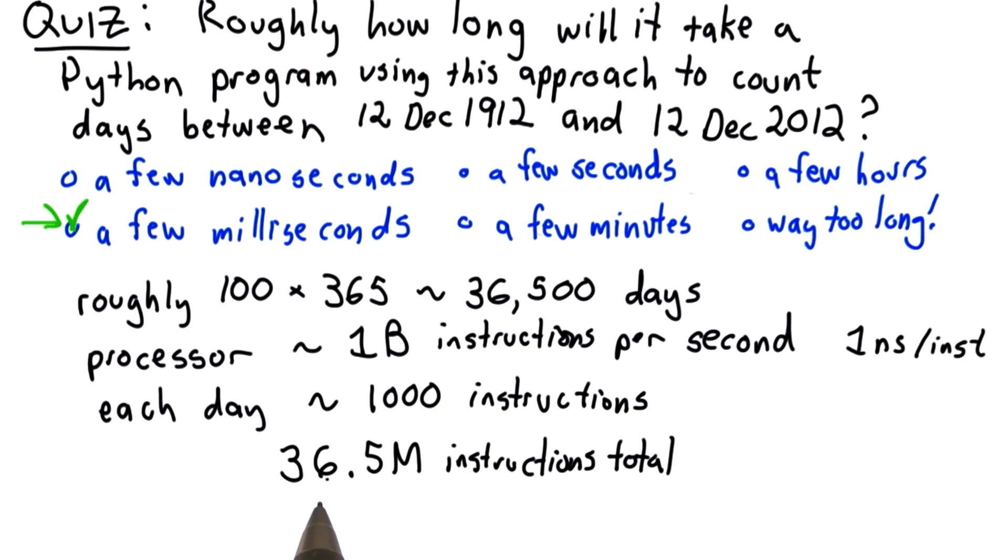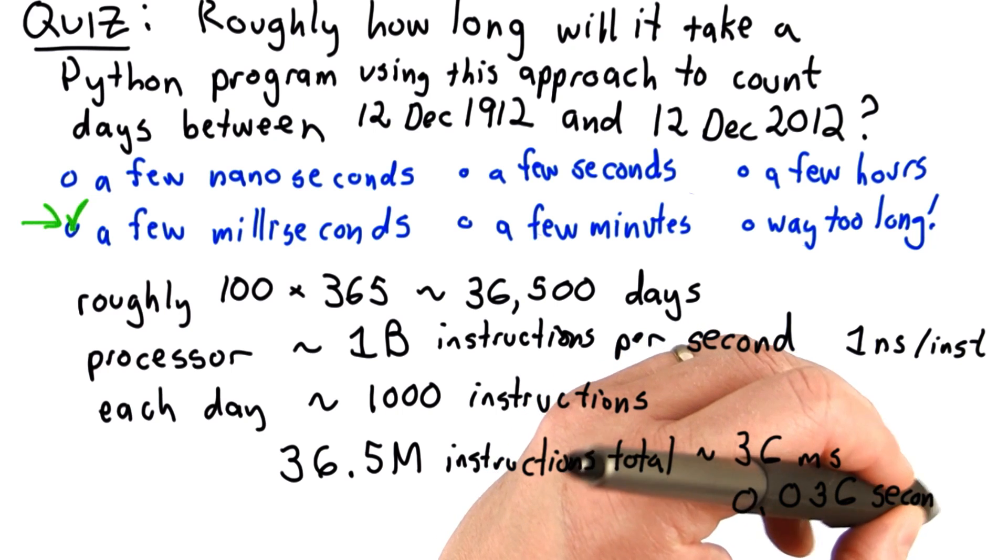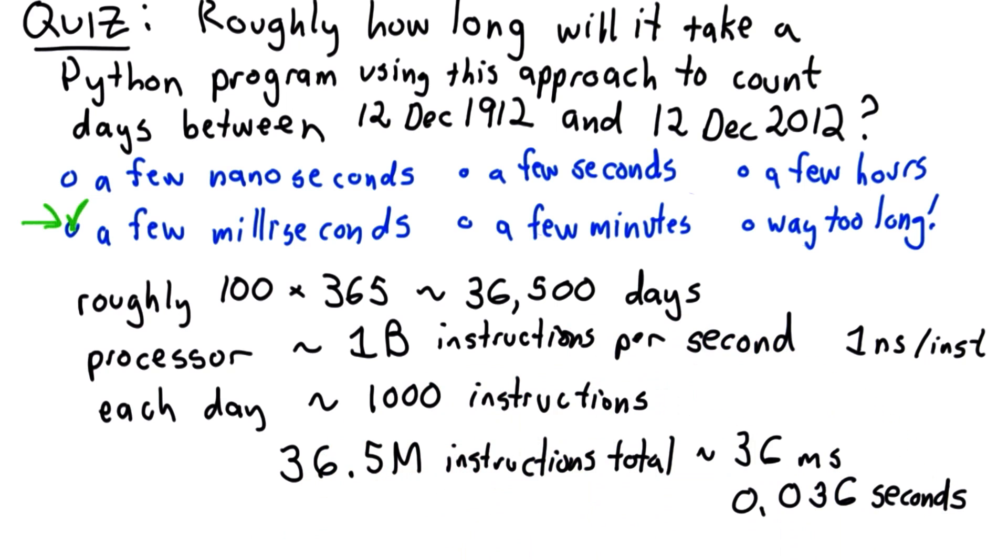So that's going to be about 36 million nanoseconds, which is 36 milliseconds, which is 0.036 seconds.